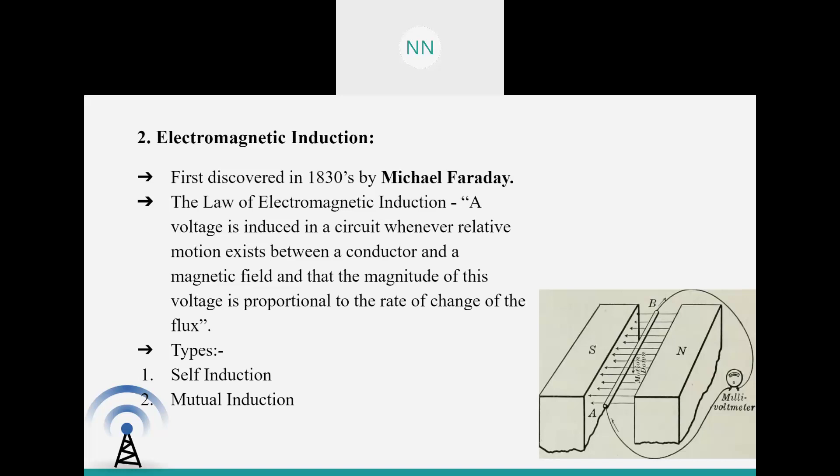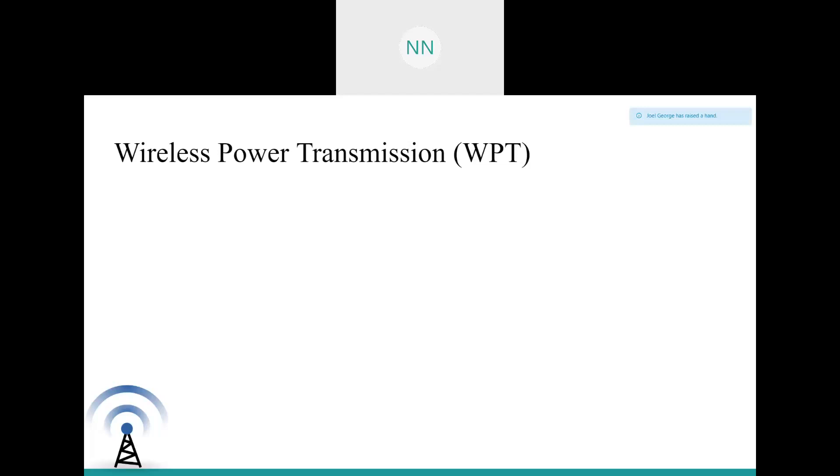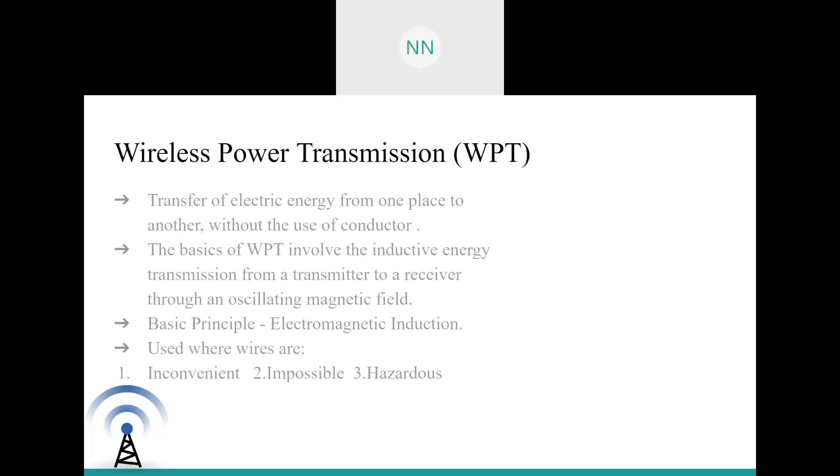These are the things which everyone already knew, and now we can move directly to our topic, wireless power transfer. From the name itself, the concept is pretty much clear. Wireless power transfer means transmission of power wirelessly. At present, we have wired means dominating the field of power transmission for over many years, and this method has a lot of disadvantages. Transfer of electric energy from one place to another without the use of conductors, and the basic principle is electromagnetic induction, and to be more precise, it is mutual inductance.